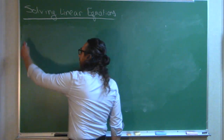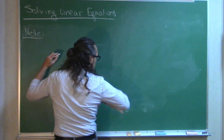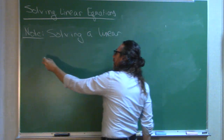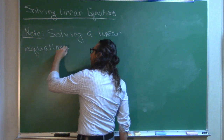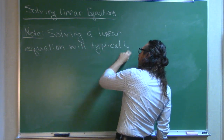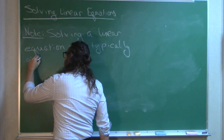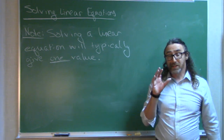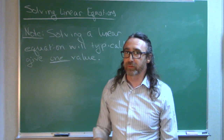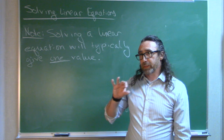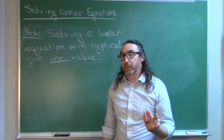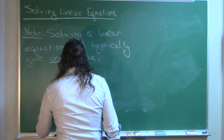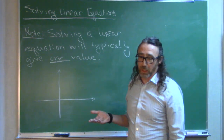The last thing I wanted to talk about was some special cases. Solving a linear equation will typically give one value — if I'm dealing with a linear equation, I am expecting exactly one solution. There are a couple of exceptions. If you think about the material we did when we were graphing linear functions, the graphs of linear functions are lines. So solving a linear equation involves finding where two lines intersect.